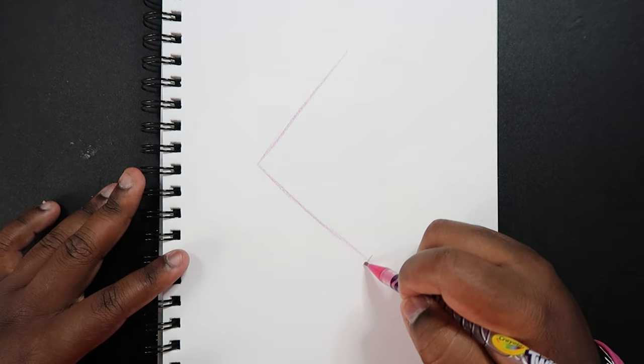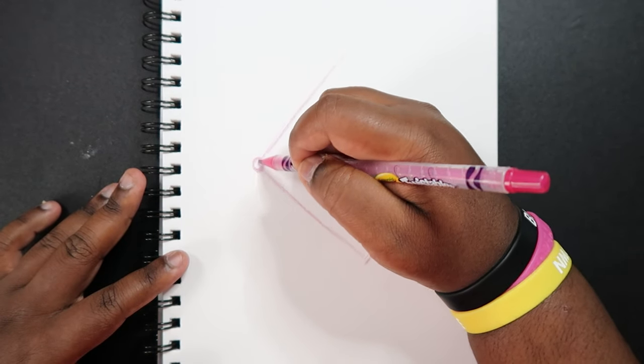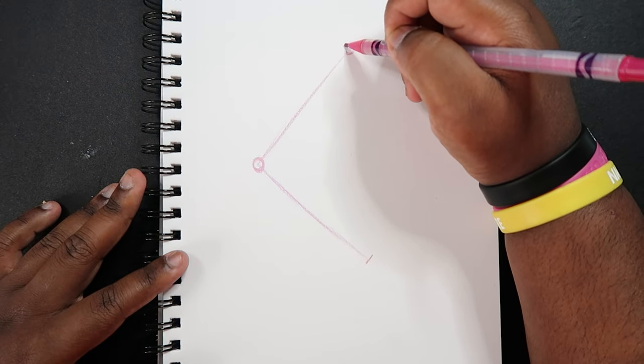I'm just going to add a little dash right there—that's going to be the wrist. Right here, this little vertex, that's the elbow. And then up here will be the shoulder.